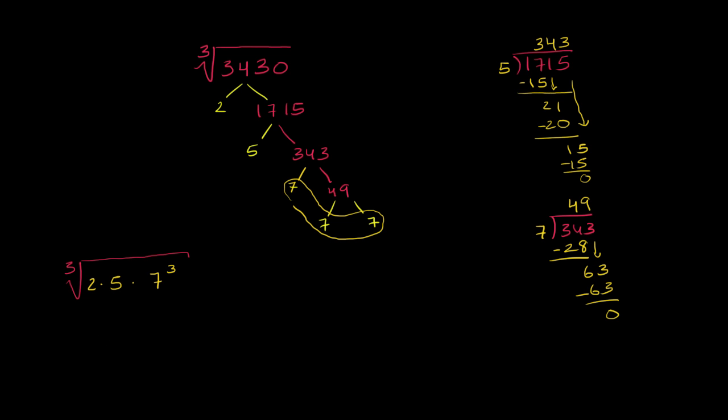And from our exponent properties, we know that this is the exact same thing as the cube root of 2 times 5 times the cube root, let me do that in the same color just so we see what colors we're dealing with. So the cube root of 2 times 5, which is the cube root of 10, times the cube root, and I think you see where this is going, cube root of 7 to the third power. Keeping track of the colors is the hard part, 7 to the third power.